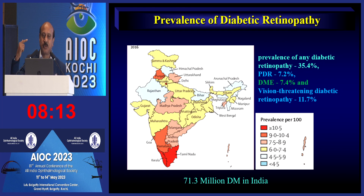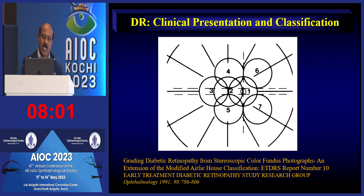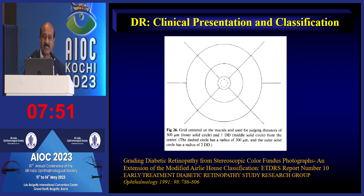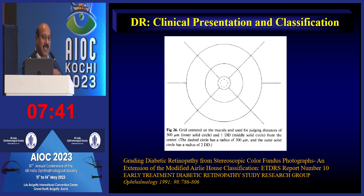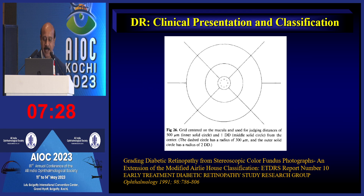The ETDRS classification gives great importance to the posterior pole, requiring assessment of seven standardized fields, with the macular area and grid being especially important. The central ring is 300 microns, the inner solid line is 500 microns, and the outer boundary is one disc diameter plus 300 microns. Being familiar with this grid is essential in the clinic to decide what treatment is applicable for these patients.